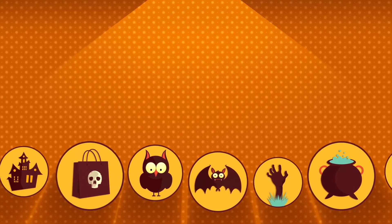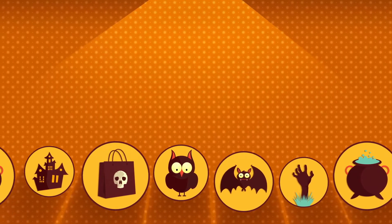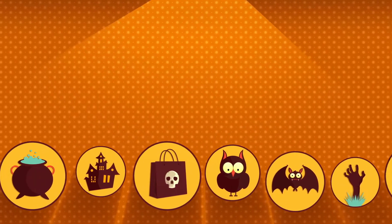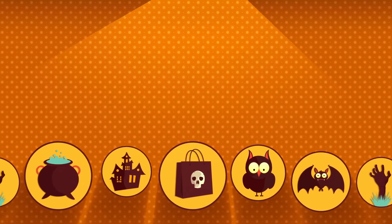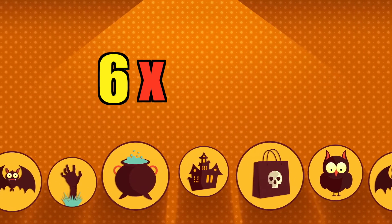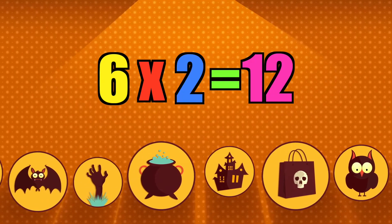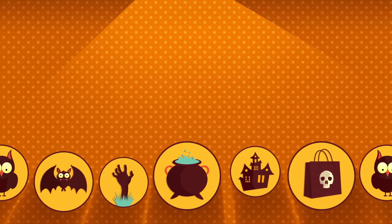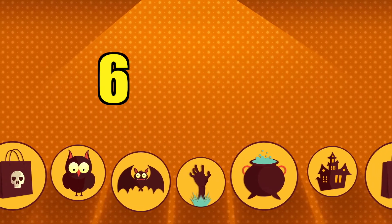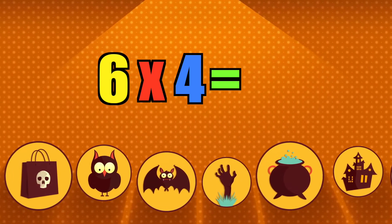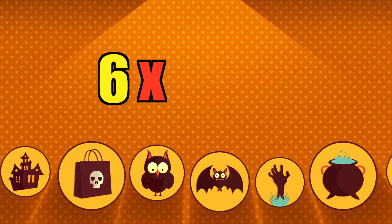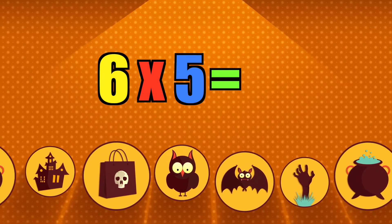All right. Let's do this one more time. Six times one is six. Six times two is twelve. Six times three is eighteen. Six times four is twenty-four. Six times five is thirty.